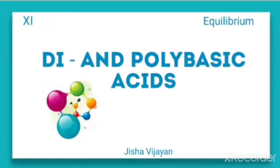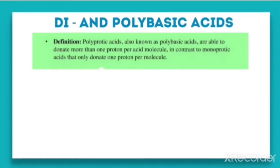In this video we are going to discuss dibasic and polybasic acids. As you are already familiar, acids can donate protons. Depending upon the number of protons donated, they can be named as mono, di, tri, or polybasic acids. Polybasic acids, also known as polyprotic acids, are able to donate more than one proton per acid molecule. In the case of a monoprotic acid, it can donate only one proton per molecule.